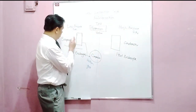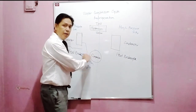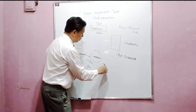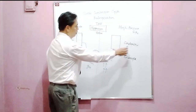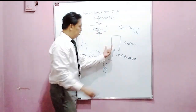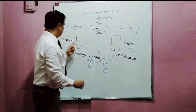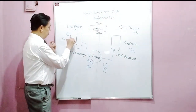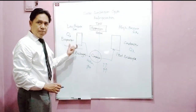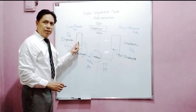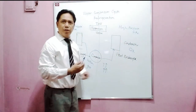So the low pressure refrigerant coming from the evaporator will go to the compressor, and it will be compressed. Once you compress it, the temperature will go up and the pressure will also go up. Then it will come to the condenser. The function of the condenser is heat rejection, while the function of the evaporator is heat addition — meaning the evaporator absorbs heat.